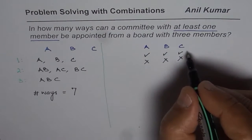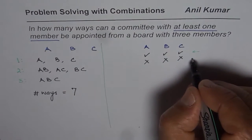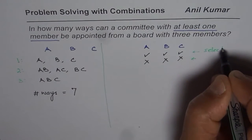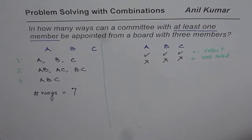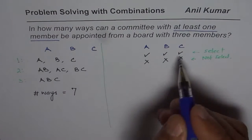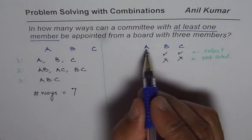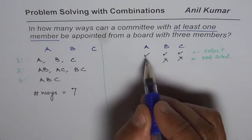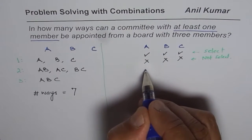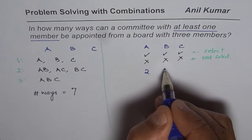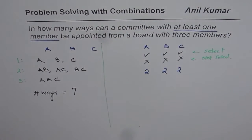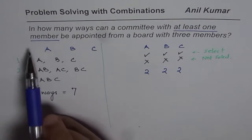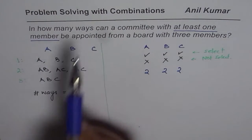So I am putting these check marks and these crosses for select or not select. So basically what we realize here is that selecting or not selecting will give us two options for A, two options for B, and two options for C.